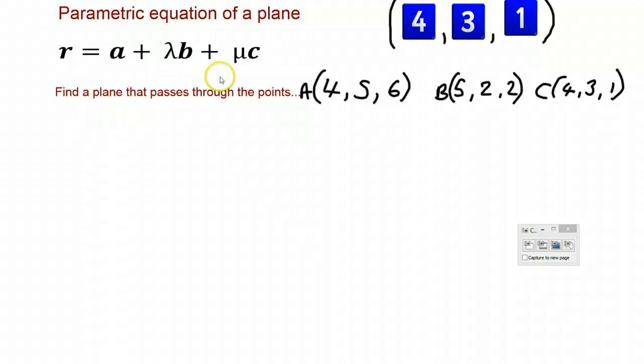Back over here, if we just have a look at our general form of the parametric equation, this here is a position vector, and this here is a direction vector, and this here is the direction vector. So in order to describe this plane, we need a position that lies on the plane and we need two direction vectors that are on the plane.